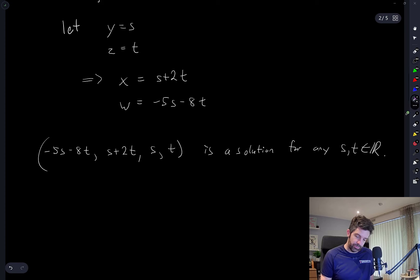This is a solution for any S and T real numbers. So we have a 2, because we have two free variables, the set of vectors which satisfies this system is going to be a two-dimensional subspace of four-dimensional space.